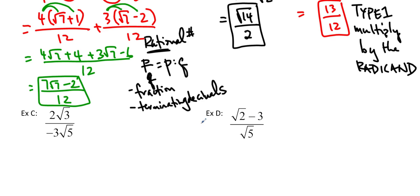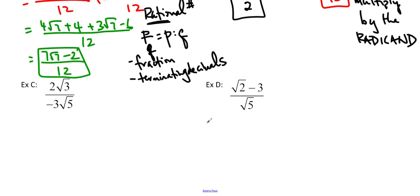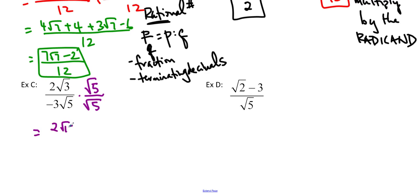So we're going to try these other two out. You can pause the video and try them on your own if you want. This first one: 2 root 3 over negative 3 root 5. Again, I want to rationalize the denominator, just the denominator, not the top. So I'm going to multiply by root 5 over root 5. You don't have to multiply by negative 3 root 5 because the negative 3 isn't inside of the radical — it's not the radicand. So 2 times root 3 times root 5 is 2 root 15. And negative 3 times 5, because root 5 times root 5 cancels, we get negative 15.